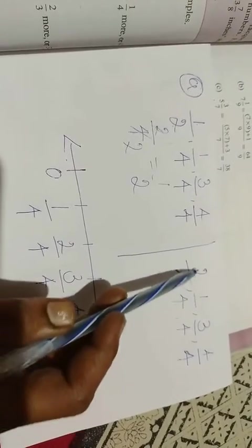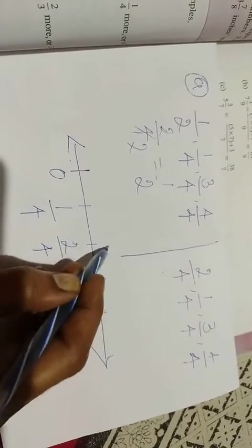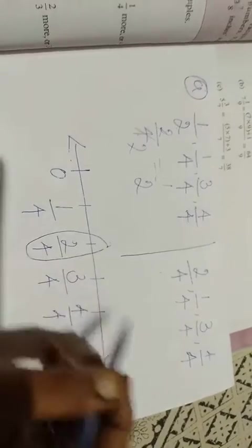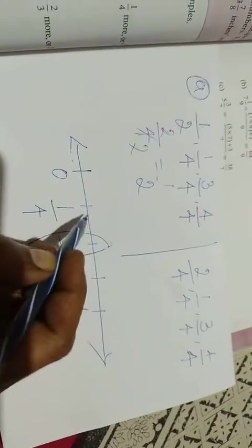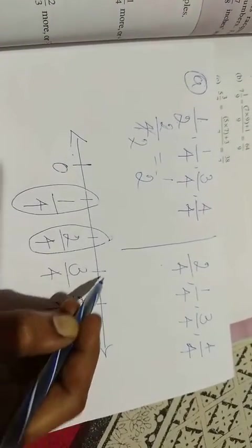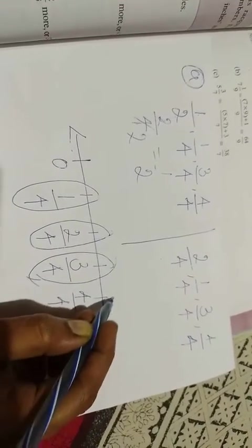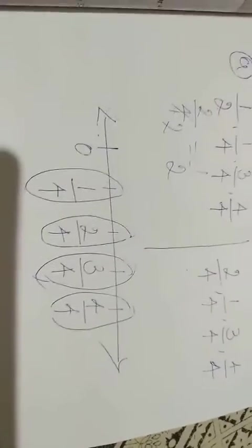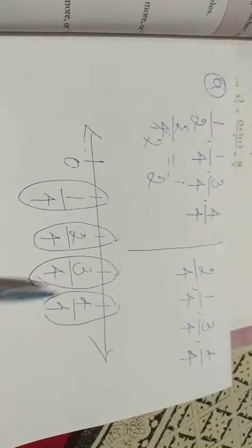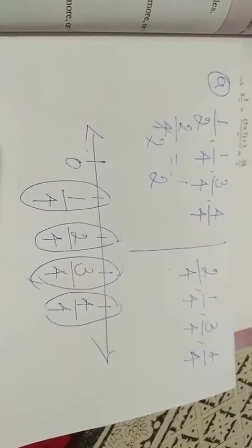First one, 2 by 4 - circle that one. Then 1 by 4, 3 by 4, and 4 by 4. Locate the points. Understand? I hope you understand the first one.